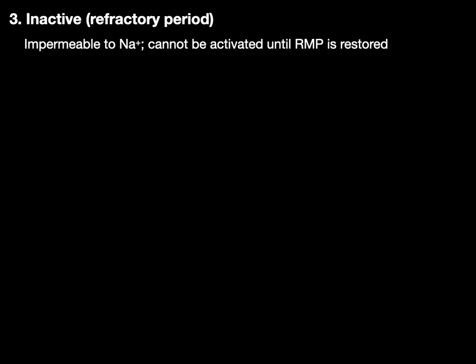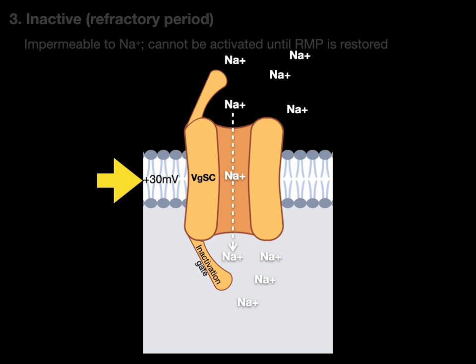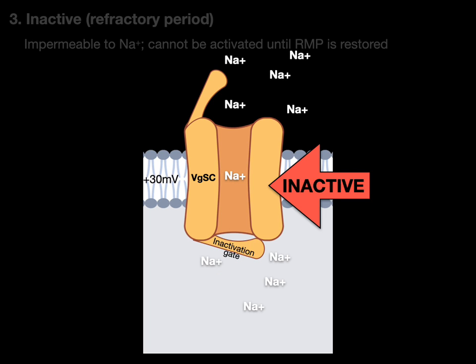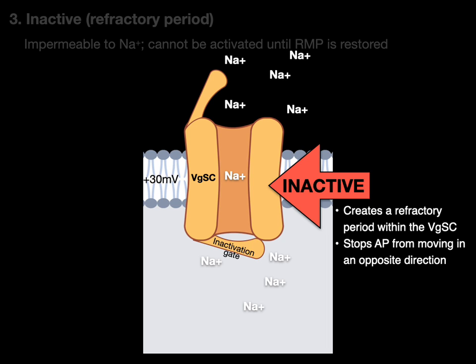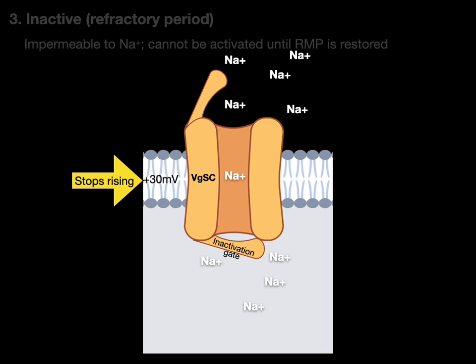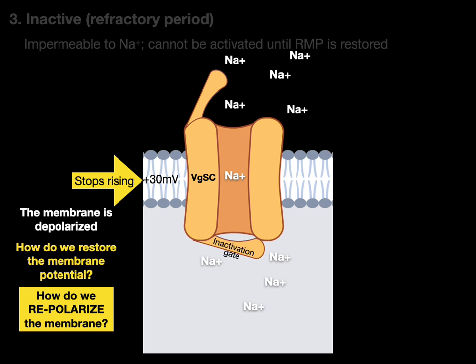The third conformational state is the inactive state, or refractory period. The channel is impermeable to sodium and cannot be activated until the resting membrane potential is restored. When the membrane depolarizes to +30 millivolts, the inactivation gate closes shut, making the VGSC inactive. This creates a refractory period, which prevents any action potential from traveling in the opposite direction or from triggering another action potential. Sodium cannot get through, so the +30 millivolts stops rising and the membrane is said to be depolarized.